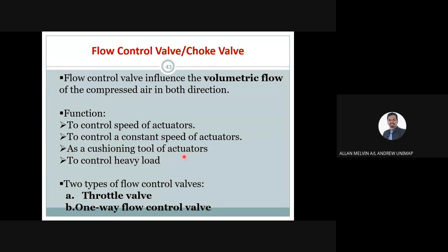The second function of a flow control valve is to maintain a constant speed even if supply pressure is uneven — regulating the speed so it remains always the same to the actuators, which helps the actuators last longer. A third function is as a cushioning tool: using compressed air to provide a cushion for the cylinder, so when the piston reaches the end of its stroke it slows down, reducing impact.